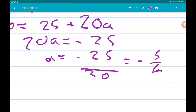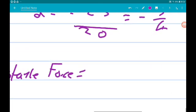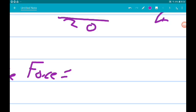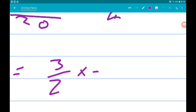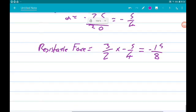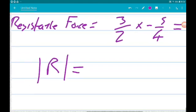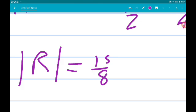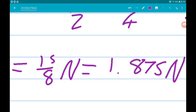So now we know that the resistance force on the boat is going to be, well it's mass, so 1.5, let's call it three halves, times minus five over four. Now that is going to be minus 15 over 8. Now the magnitude, let's call it R, is positive, so that's positive 15 over 8 newtons, which is 1.875 newtons.